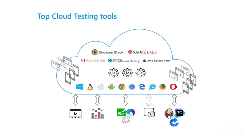These tools have features to record test execution, generate test reports, and take screenshots for failure cases. Most importantly, they allow integration with different automation tools like Appium and Selenium, as well as CI/CD tools like Jenkins, Azure Pipeline, and so on.